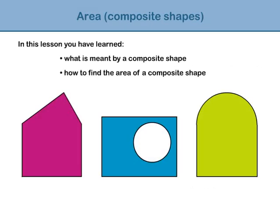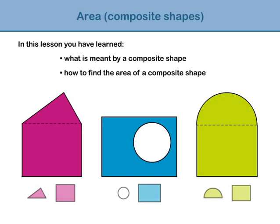In this lesson, you have learned that a composite shape is a shape which can be broken up into its simpler parts. The area of the composite shape is found by using the formulae for the basic parts and adding or subtracting the answers to find the total area.